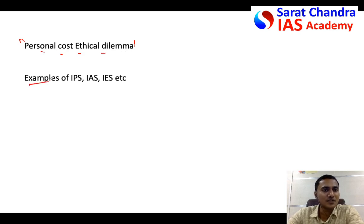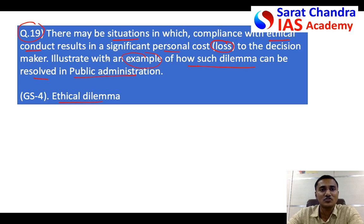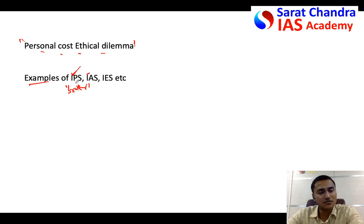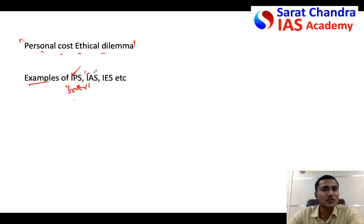Give examples from public administration. For example, if an IPS officer finds that his brother is involved in a criminal activity, he has two options: one is to simply warn his brother and let him go, because he is his own brother; the second is to file a criminal complaint or take action against him as a police officer following duty ethics. If he follows the law and ethics, he may lose his brother in his personal life.